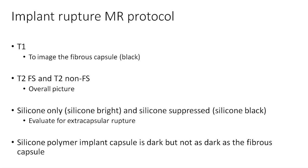If it is not following silicone intensity on both sequences, then it is not likely extracapsular silicone. It's important to remember that the silicone polymer implant capsule is dark on T1, but not as dark as the fibrous capsule.